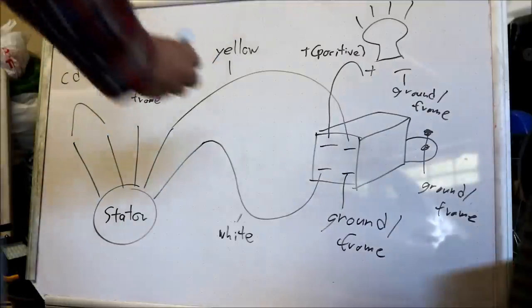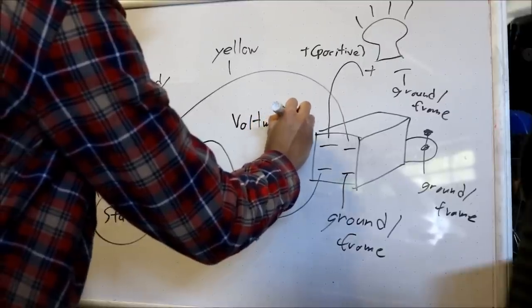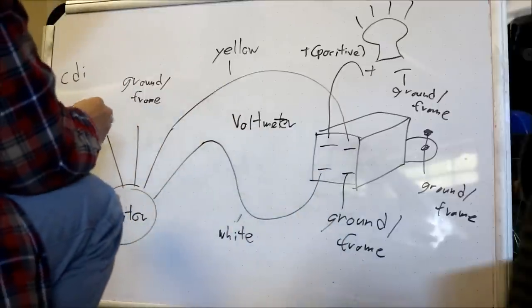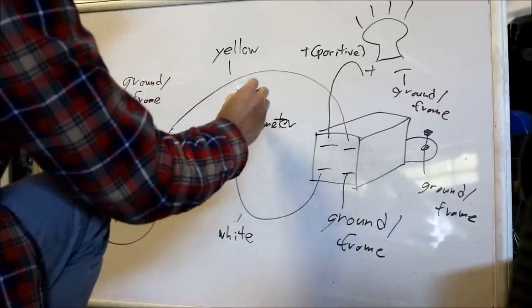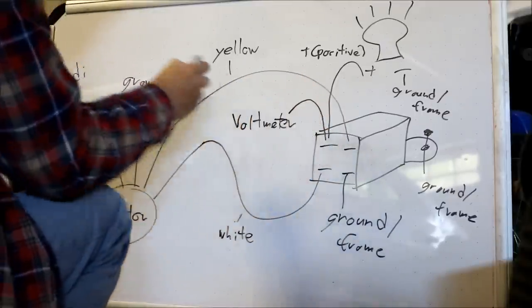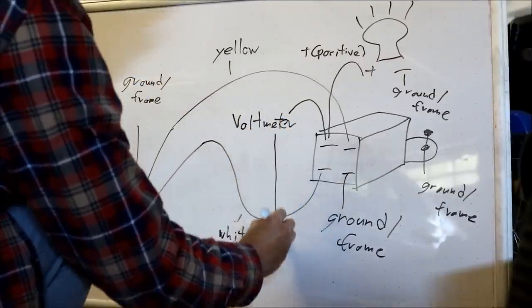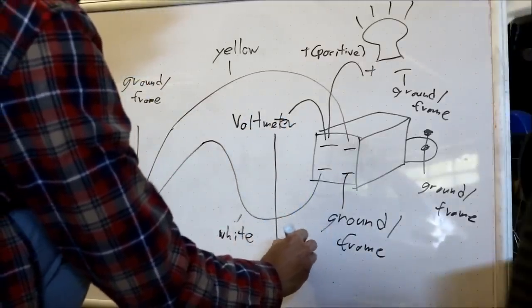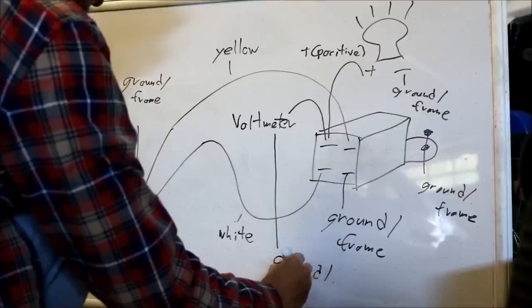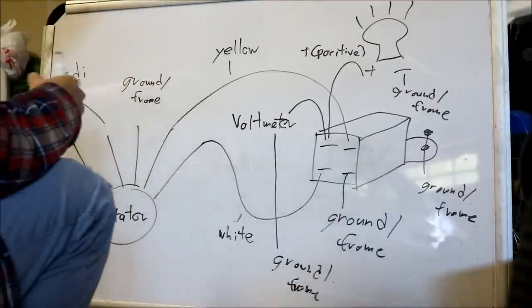So say this is your voltmeter. Set it to the DC voltage test and then connect the positive right there. And then use the other wire and connect it to ground.